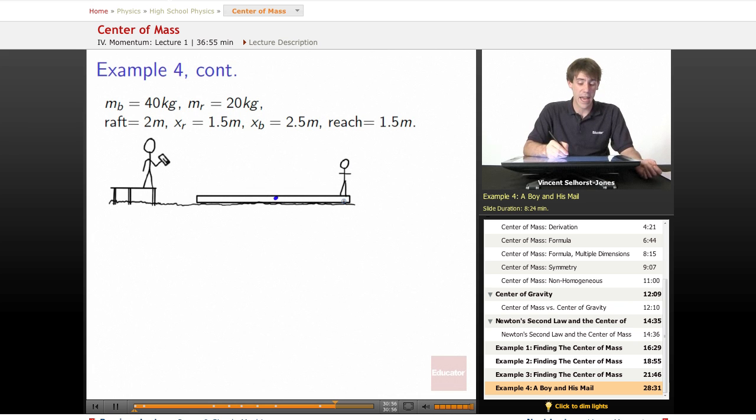The boy is at the edge at 2 meters, so we know that XR is going to be at 1.5 meters, and we haven't discussed yet what our coordinate system is. Let's make to the right positive, but where are we going to make zero?